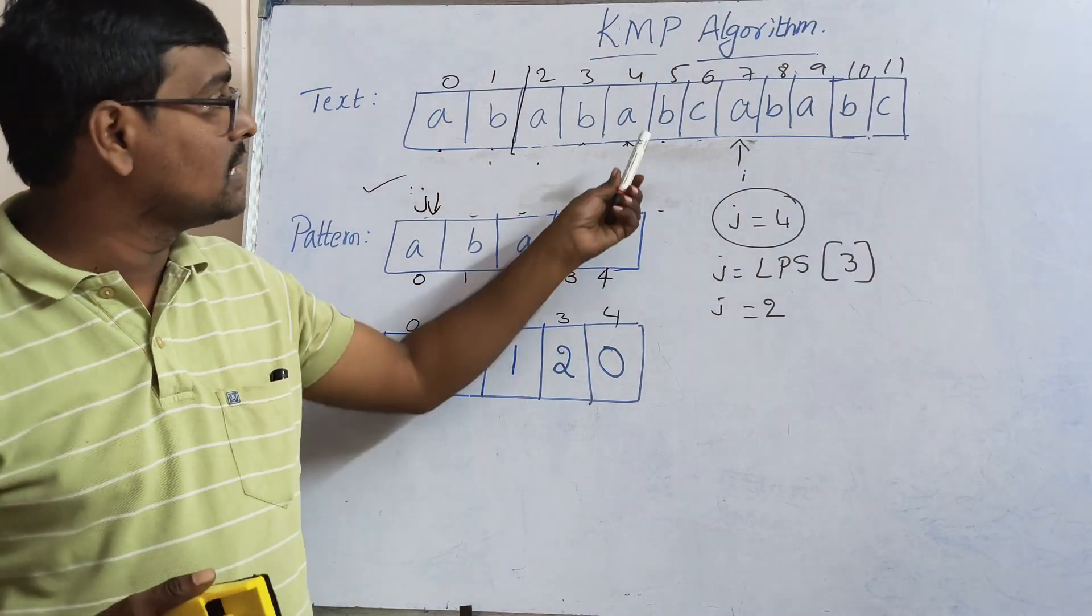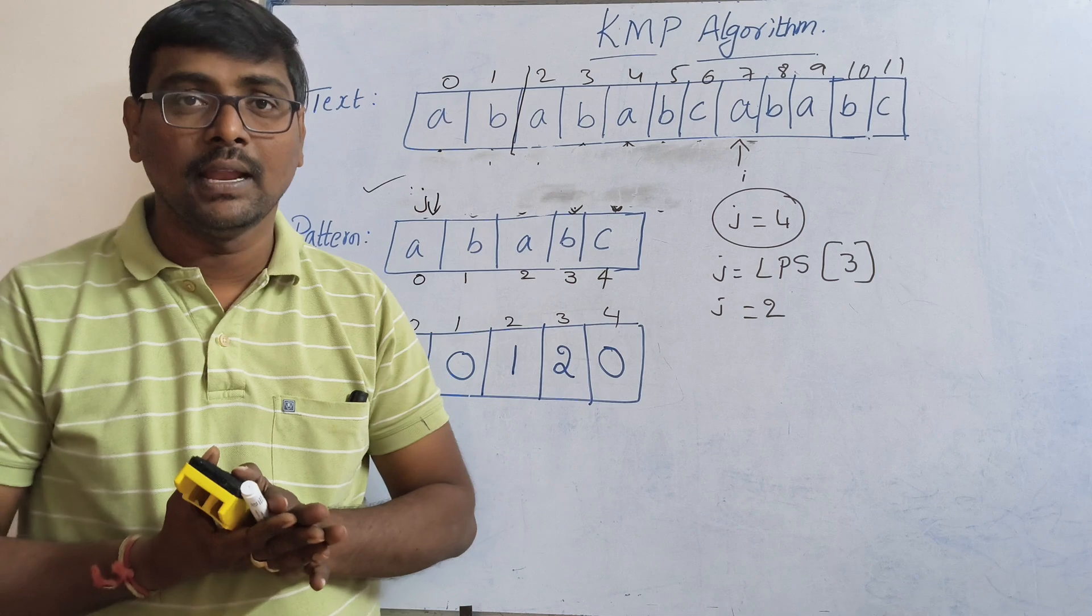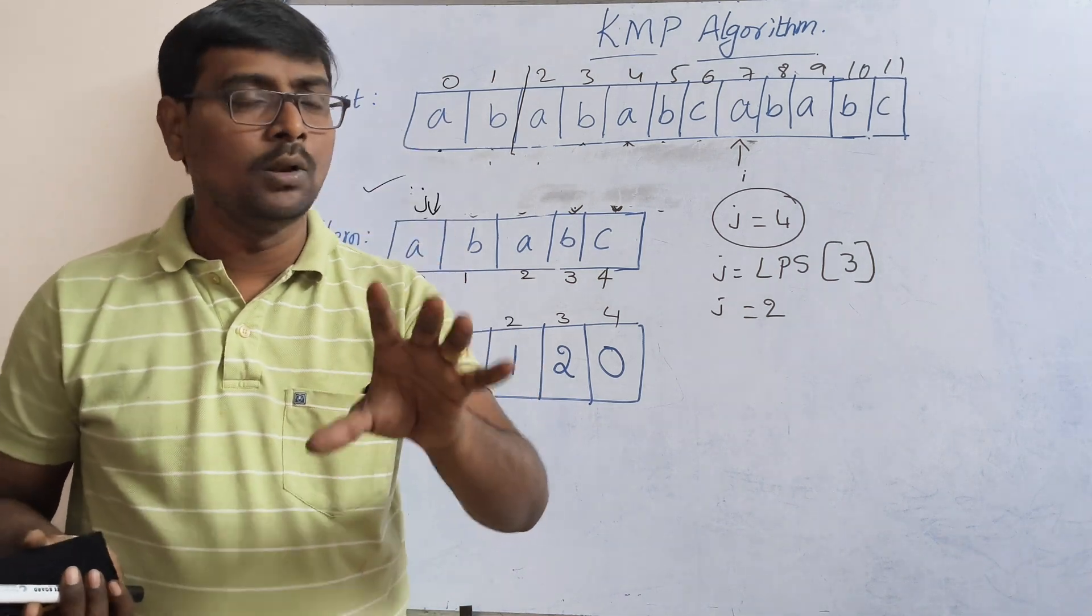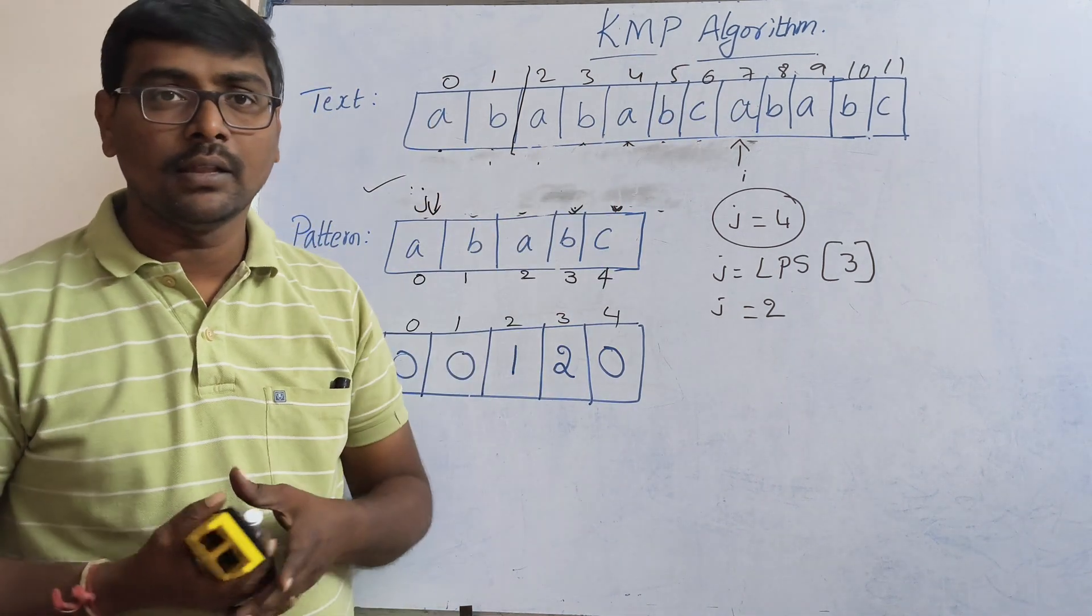That means in this text, my pattern is available at two positions. This is the way to implement KMP algorithm. In the next session we will discuss one more example for the KMP algorithm. Thank you.